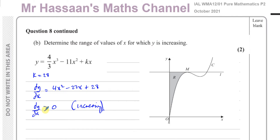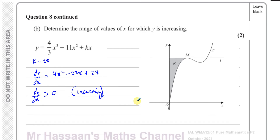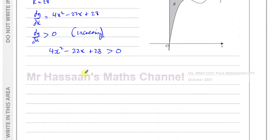Some schools of thought say greater than zero, others say greater than or equal to zero — the examining board accepts both. I'll take the gradient function 4x² - 22x + 28 and solve the inequality where this is greater than zero. Dividing everything by 2 gives 2x² - 11x + 14 > 0, which makes the numbers easier to work with.